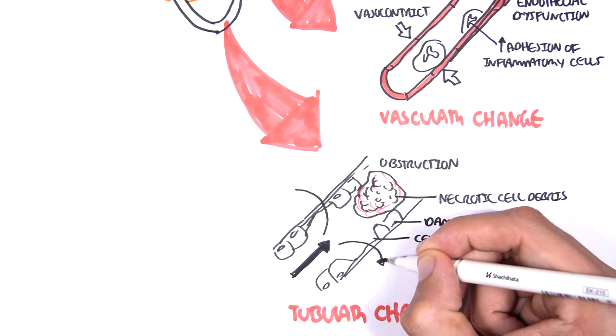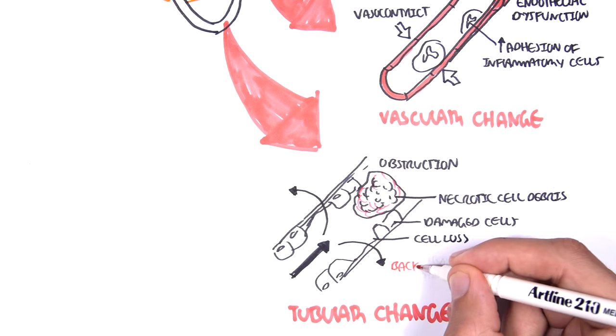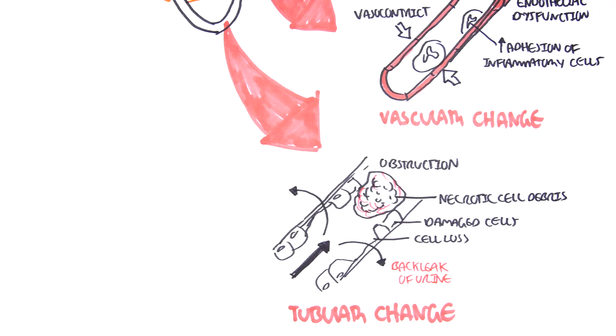And as a result, the filtrate will back leak. The urine will back leak. And this can lead to other complications. So these are the two main changes that cause a decrease in GFR in intrarenal failure.